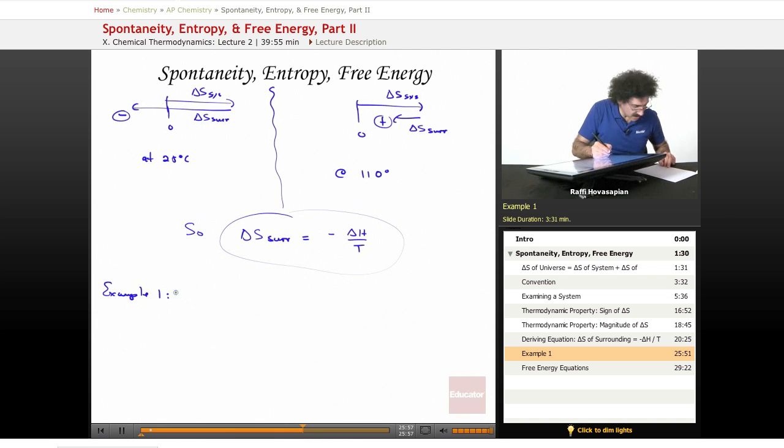Example 1. Antimony is found sometimes as a sulfide ore.